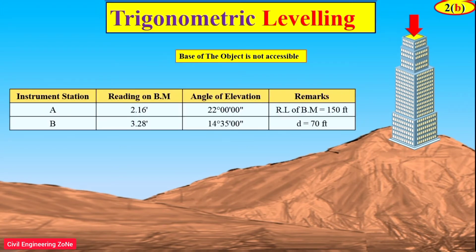The given data is: instrument station A, staff reading on benchmark is 2.16, and the angle of elevation from instrument station A to the top of the building is 22 degrees.